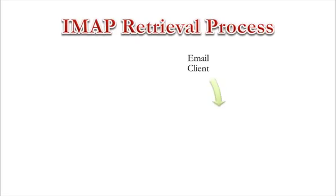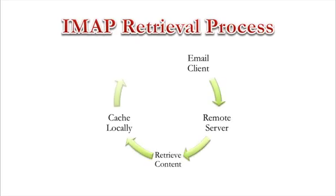The IMAP email retrieval process goes like this. First, when you click the receive option, the email client will connect to the remote email server. It then pulls the user-requested content and caches it locally, then disconnects from the server.